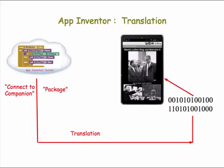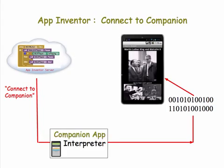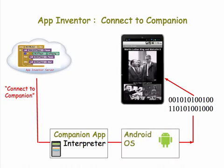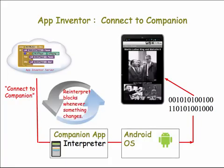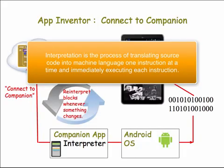When you click on Connect to Companion, the app that you're writing on your browser has to be transferred over, and the software that does that for us is the MIT Companion app, which resides on our phone. So that takes the blocks and interprets them for the Android operating system, which in turn interprets them and loads them into the processor and runs them. When you press a button, the I Have a Dream speech plays. The nice part about the Connect to Companion option is that as we make changes on the browser, they are immediately interpreted and run on our device. This form of translation, where instructions are interpreted one by one and immediately executed, is known as interpretation.